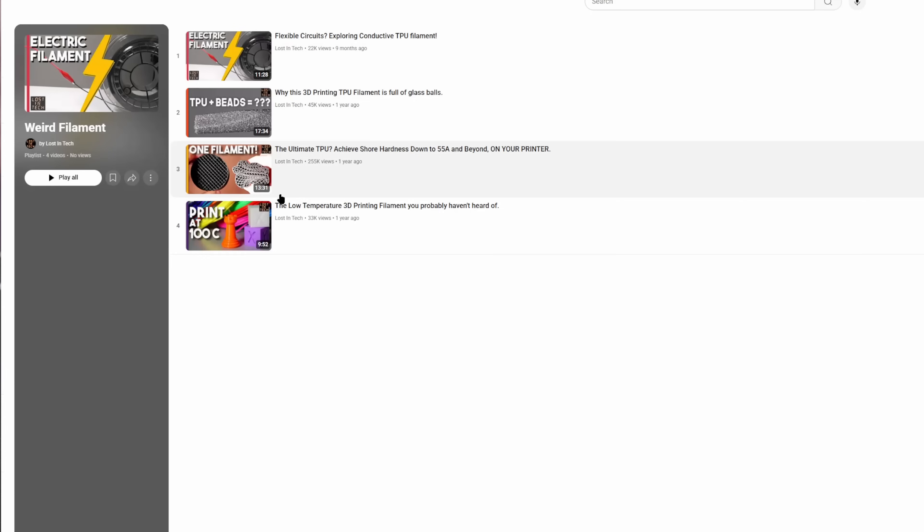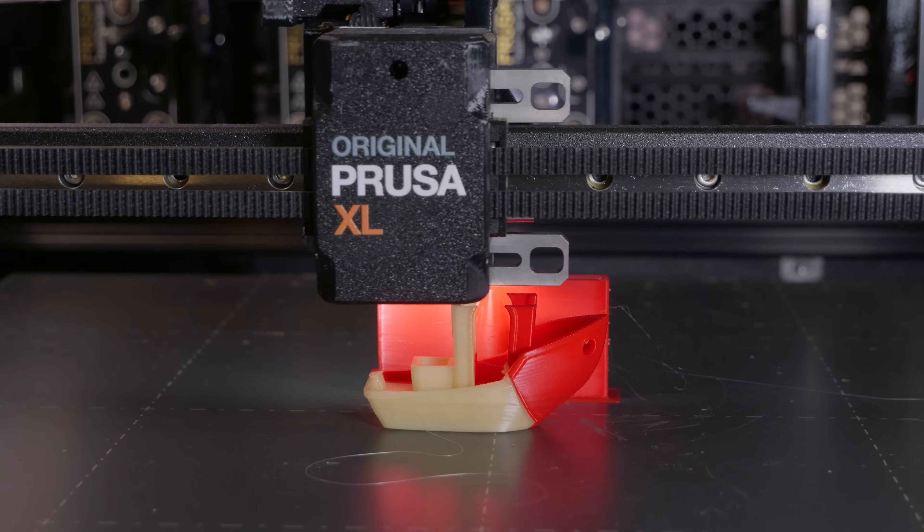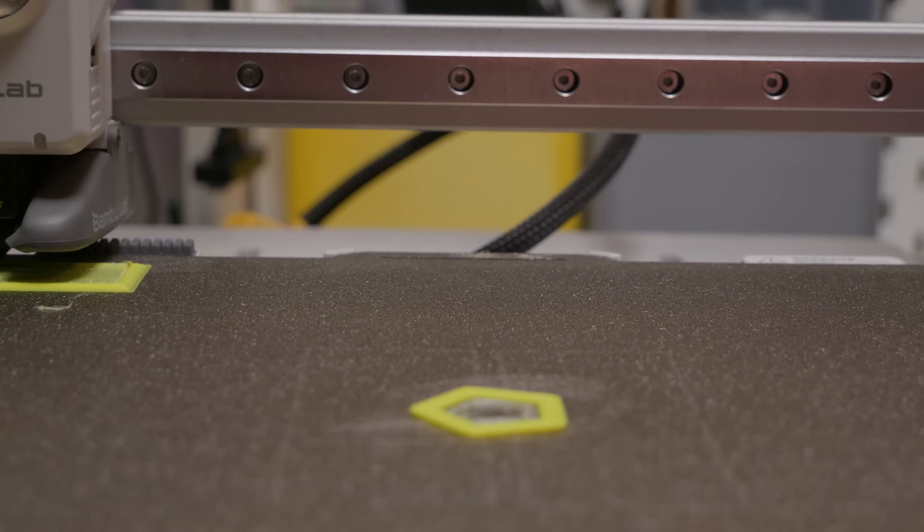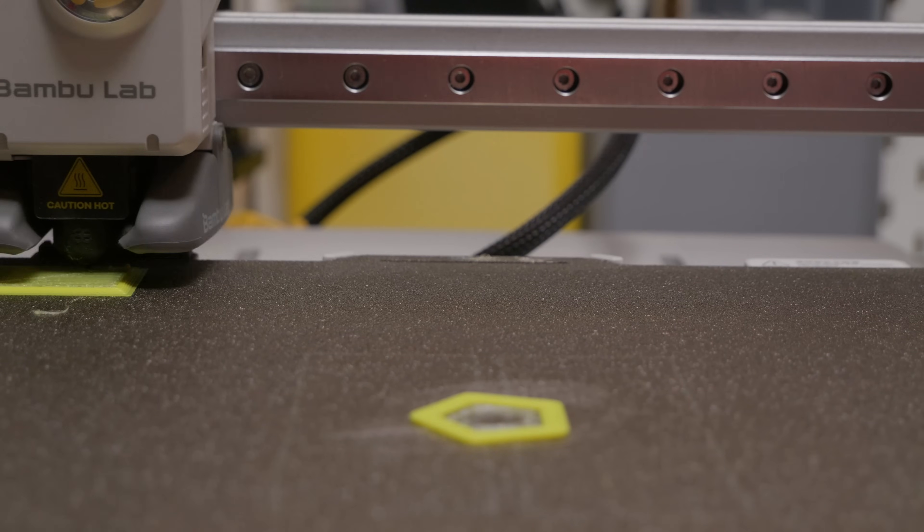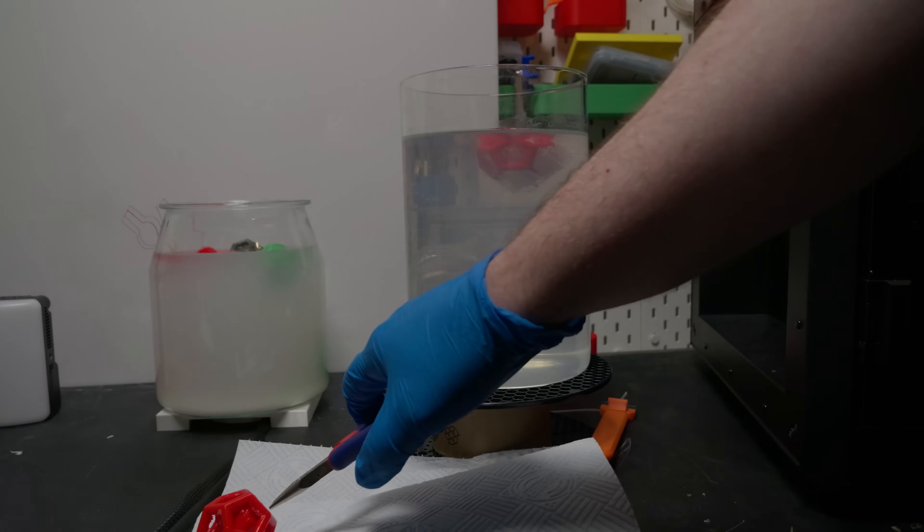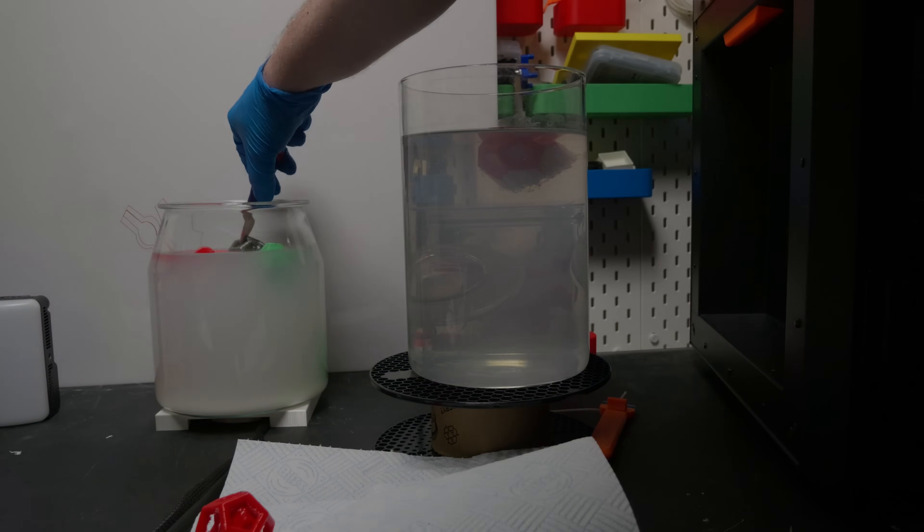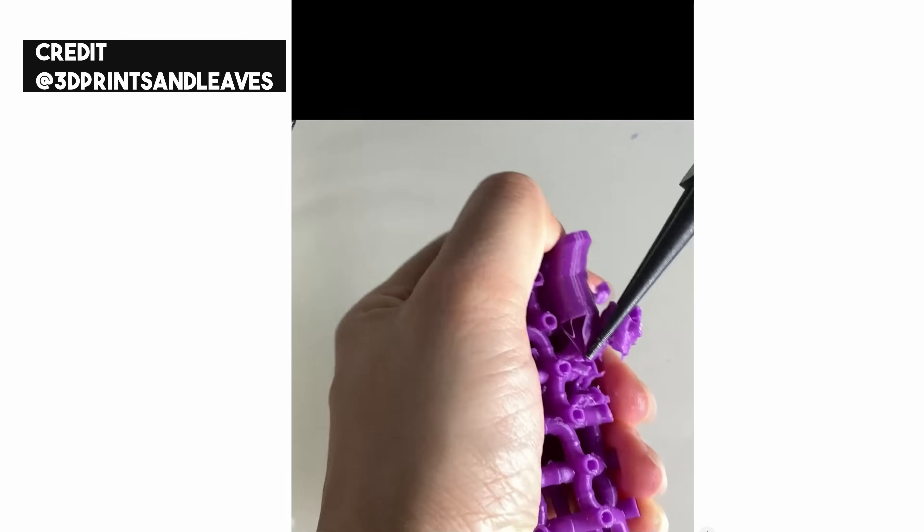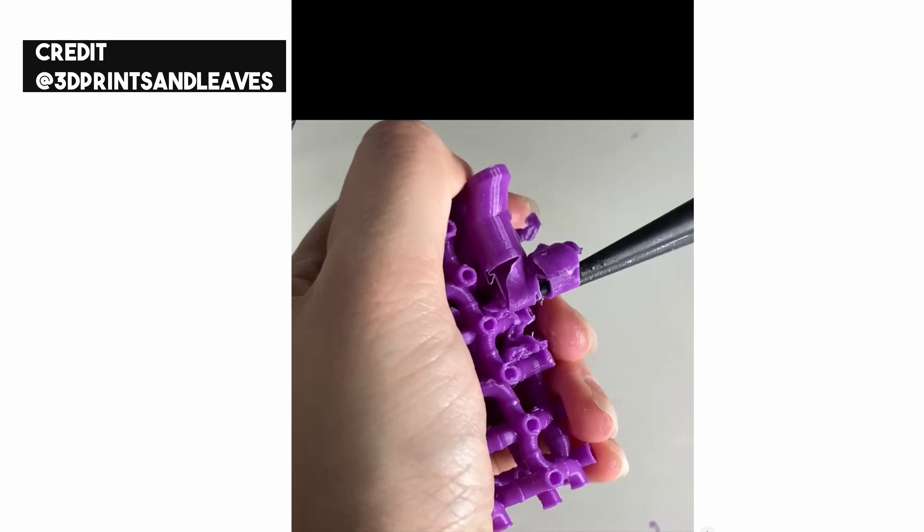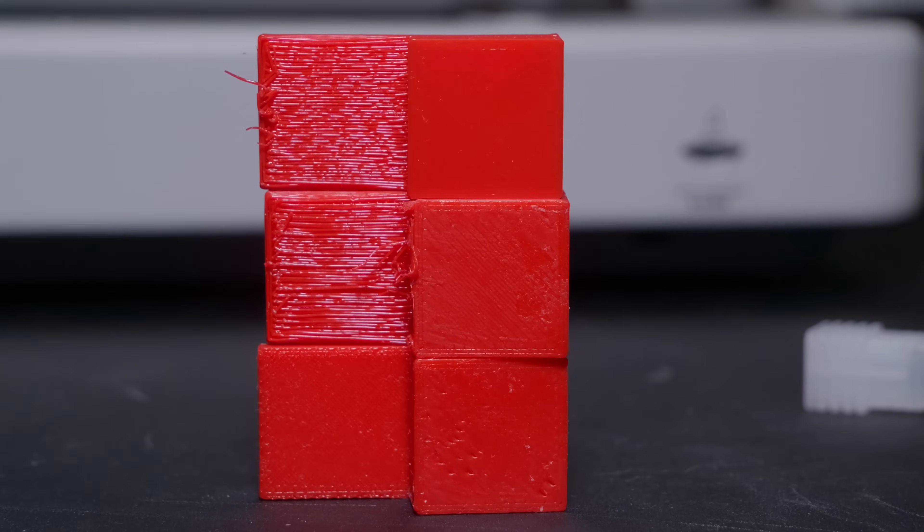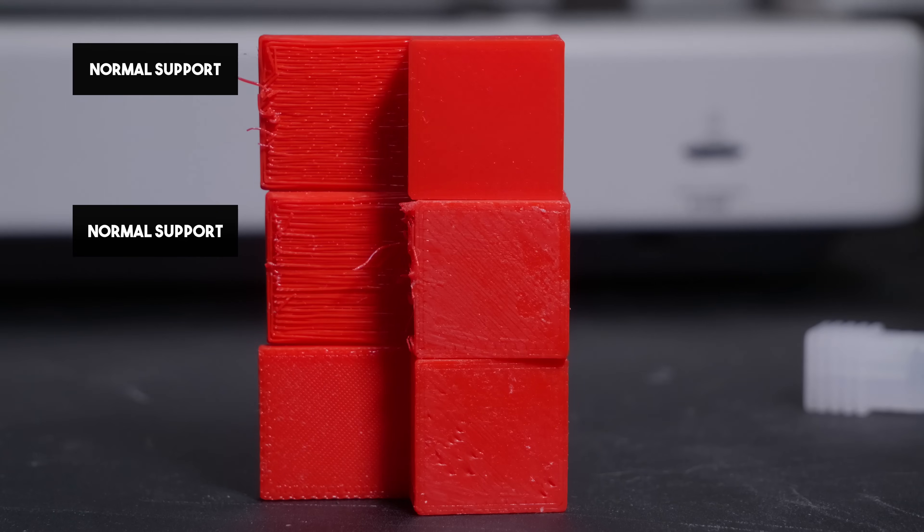The first thing we should really go through in this video is how to use the stuff. The basic gist is that you need at least two separate printheads or the ability to print two materials. What you do is use your main material for your part, obviously, but you use the PVA for the support for that part. You then stick it in water and dissolve the soluble material, and you're left with an absolutely perfect part with perfect bottoms. Because unlike a normal support strategy where you would use the same plastic to make the supports as the part, you don't need to leave any gaps or lower the density material to allow it to break off. So you aren't leaving any gaps between the top of the support and the bottom of the part, which would have caused sagging loops and those kinds of things.